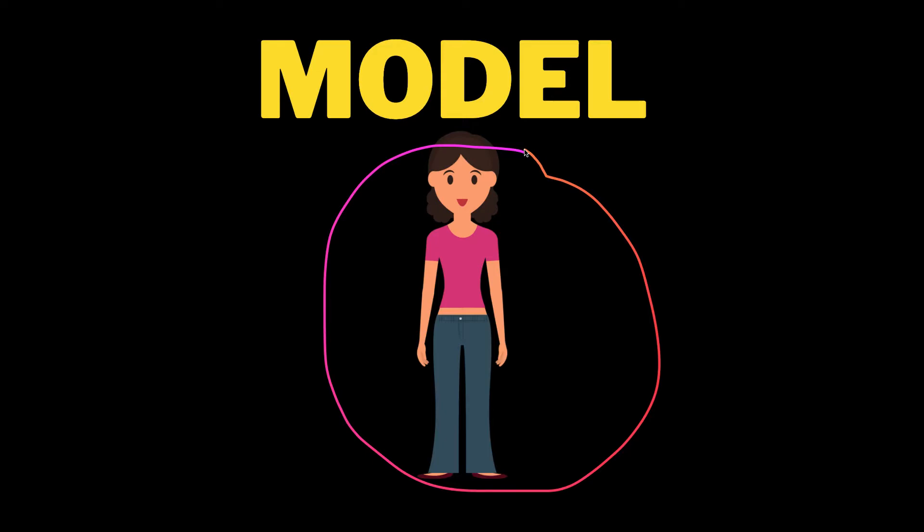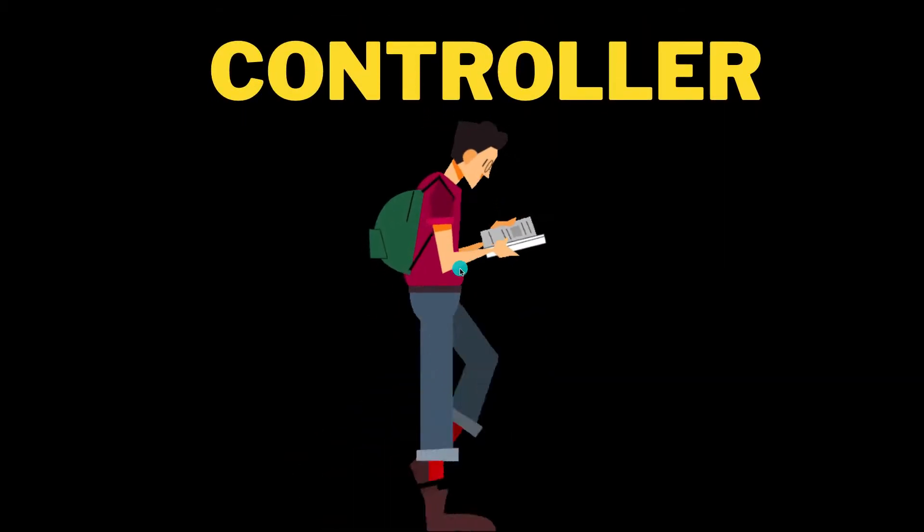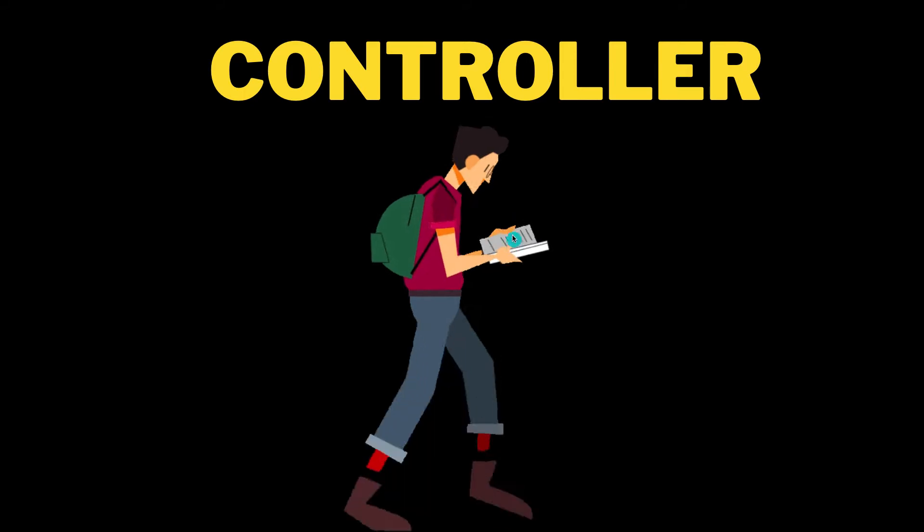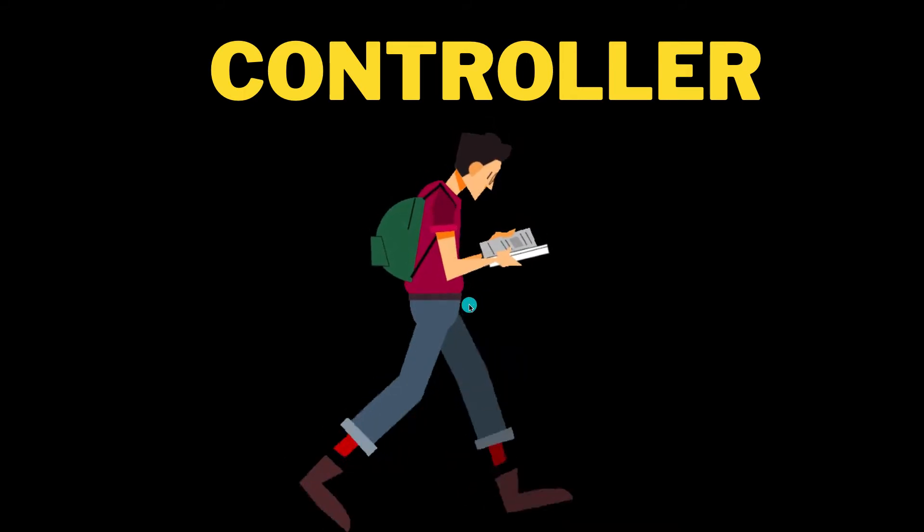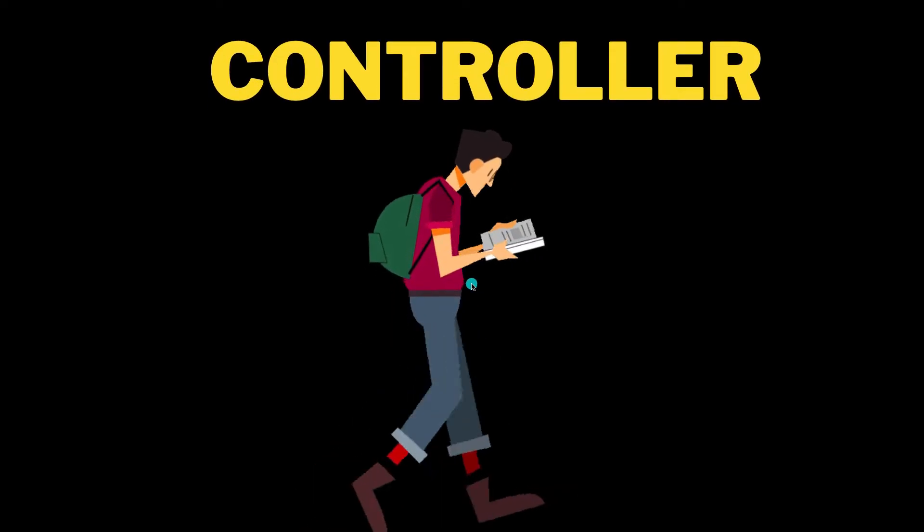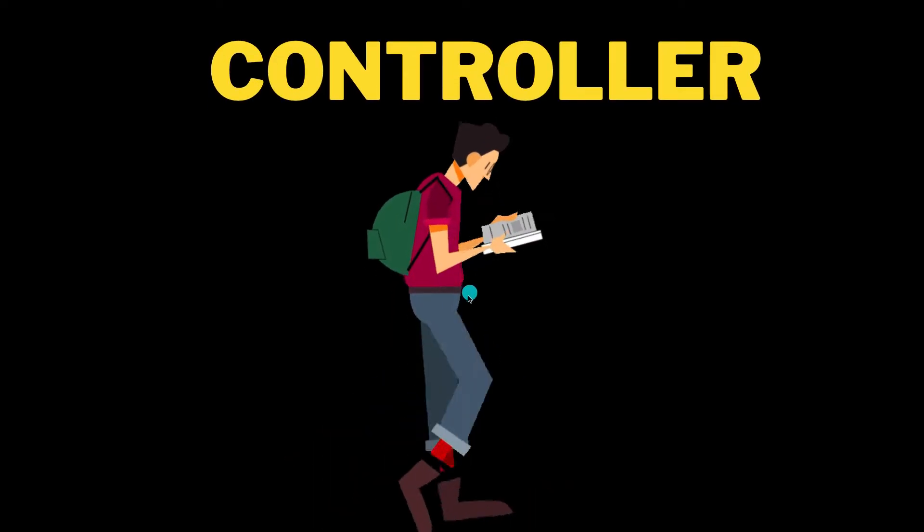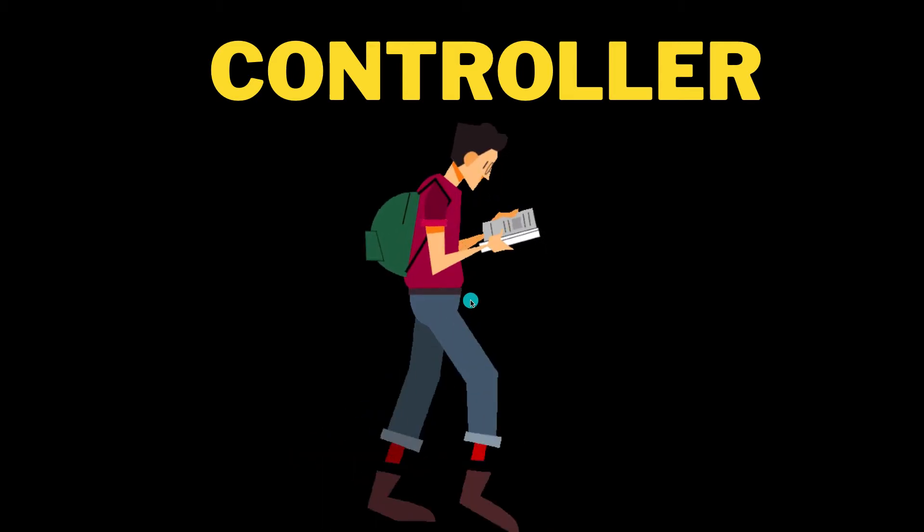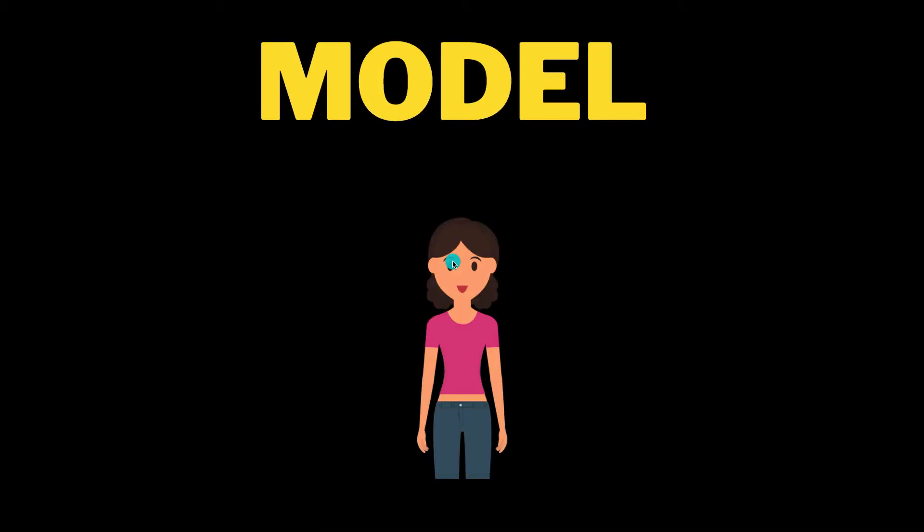So anytime somebody wants to create a user in your application, the person needs to provide all these properties of your model of the user. So the next one is what you call the controller. So controller contains your business logic of your application.